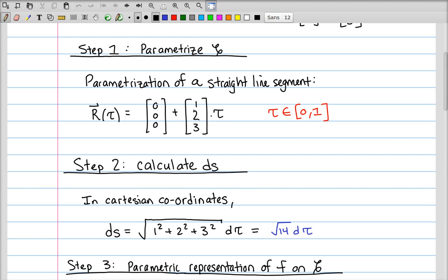In this case, that's just (1,2,3) times tau, or very simply, (1,2,3) times tau. And the range of tau is from, the domain of tau is 0 to 1.